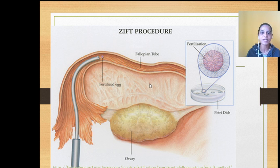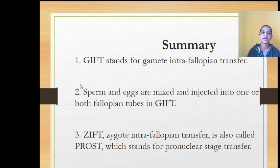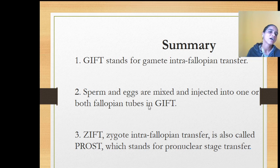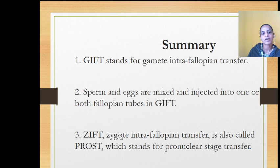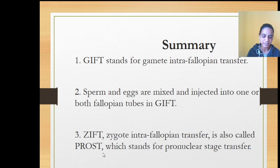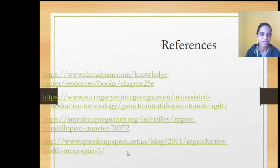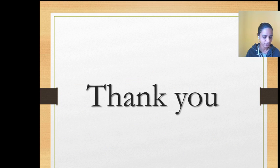In summary, GIFT stands for Gamete Intra-Fallopian Transfer, where sperm and eggs are mixed and injected into one or both fallopian tubes. ZIFT stands for Zygote Intra-Fallopian Transfer, also called PROST (Pronuclear Stage Transfer) or TET (Tubal Embryo Transfer). Thank you.